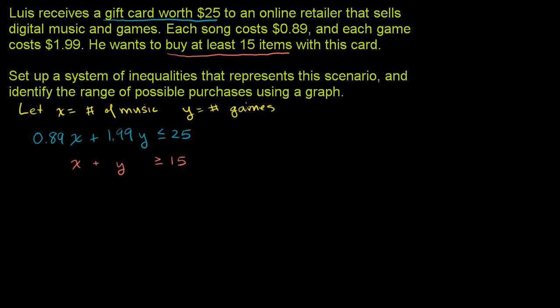Now we need to identify the range of possible purchases using a graph. This second inequality is pretty straightforward to graph. This first one is a little less straightforward because it doesn't have nice round numbers. So instead, let's just take out a graphing calculator and graph it on that.